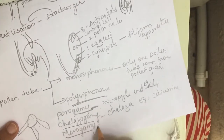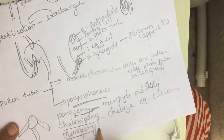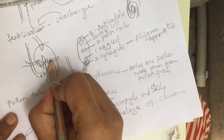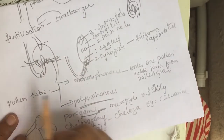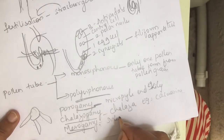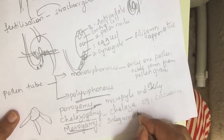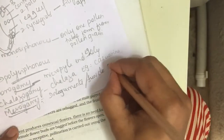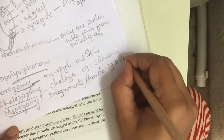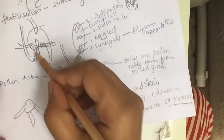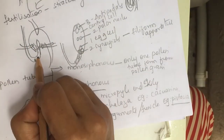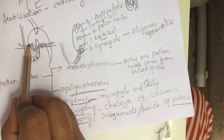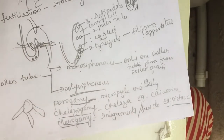Mesogamy is when the pollen tube enters through the integument — either from one side or the other through the integuments of the ovule. We call this mesogamy. Example: Cucurbita. So to summarize: if the pollen tube enters through the micropyle, it is porogamy; if it enters through the chalaza, it is chalazogamy; if it enters through the integument, it is mesogamy.